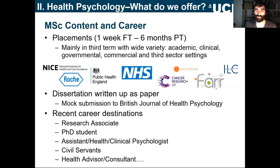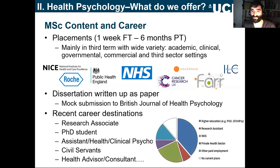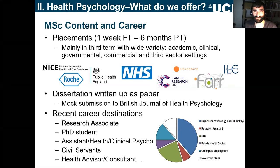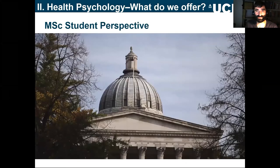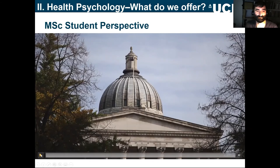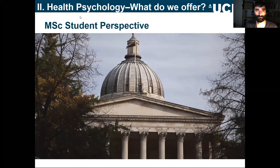Looking at career destinations, many of our students go on to become research associates or do a PhD and become academics, while others go into more applied work as assistant psychologists, health psychologists, or clinical psychologists, or into civil service, private healthcare as health consultants or advisors. This graph shows data on career outcomes — notably, those in white have no current plans, while everybody else at the point of leaving the masters has already selected a new career destination. But don't just listen to me — here is a brief video from our students.